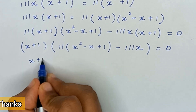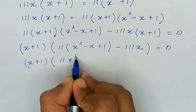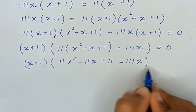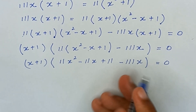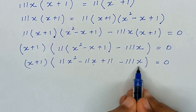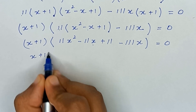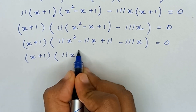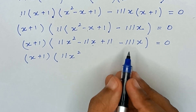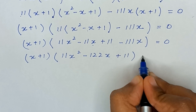Now we multiply 11 into the bracket, so it becomes 11x² − 11x + 11 − 11x equals 0. Adding and subtracting like terms — we have −11x and −11x — so it becomes: (x + 1)(11x² − 22x + 11) equals 0.